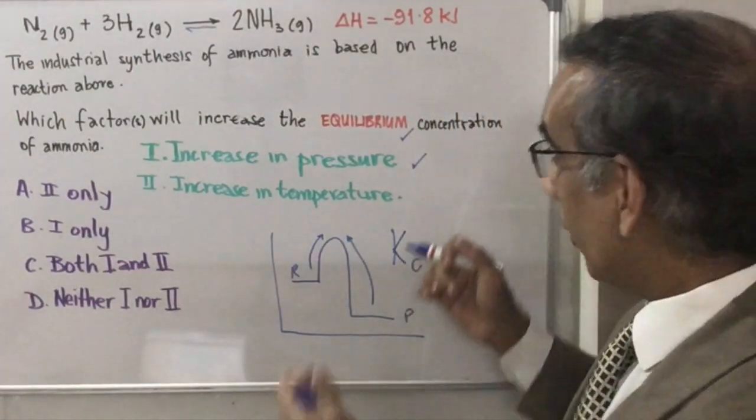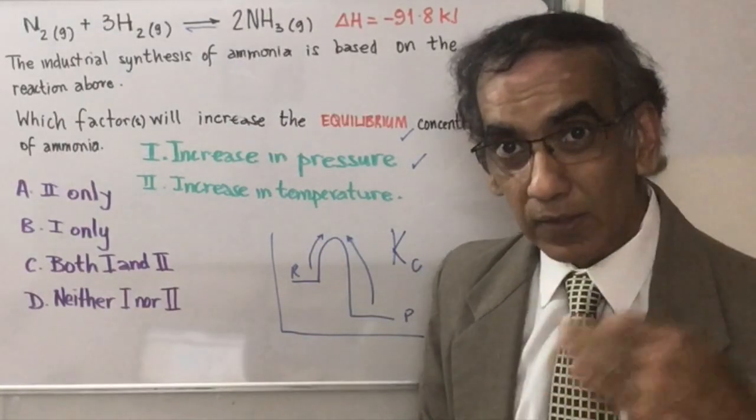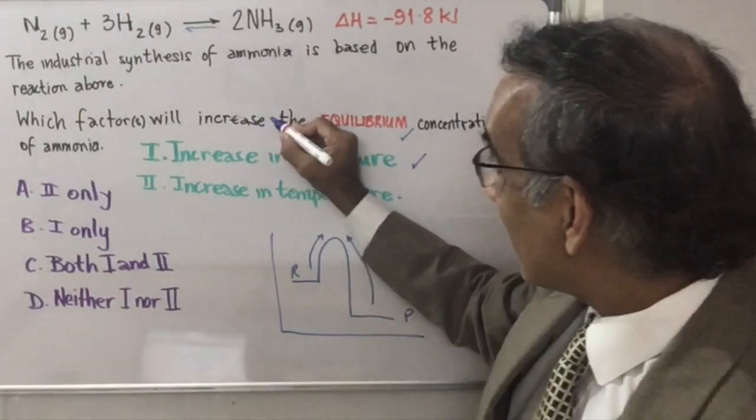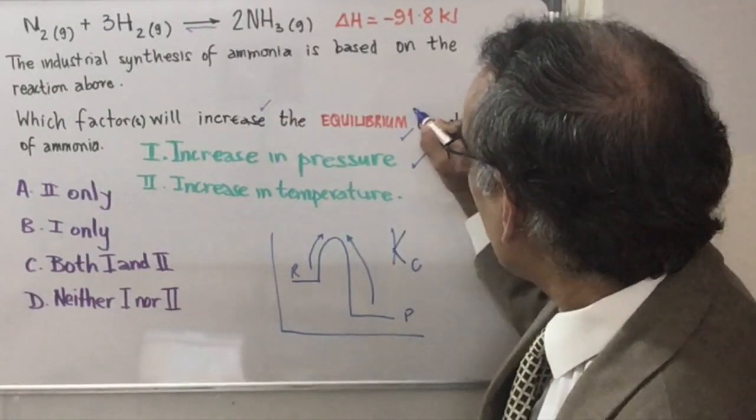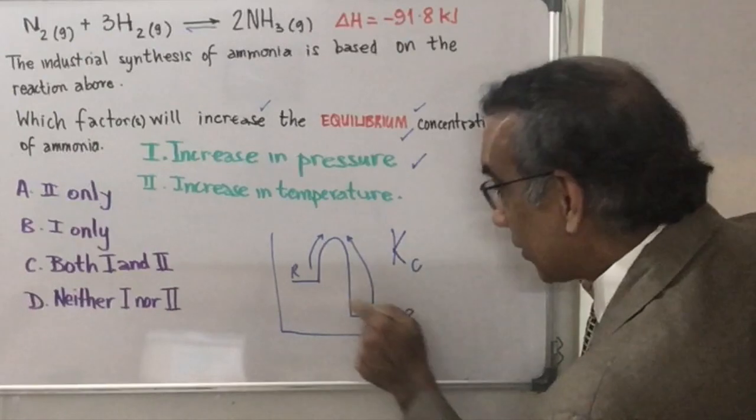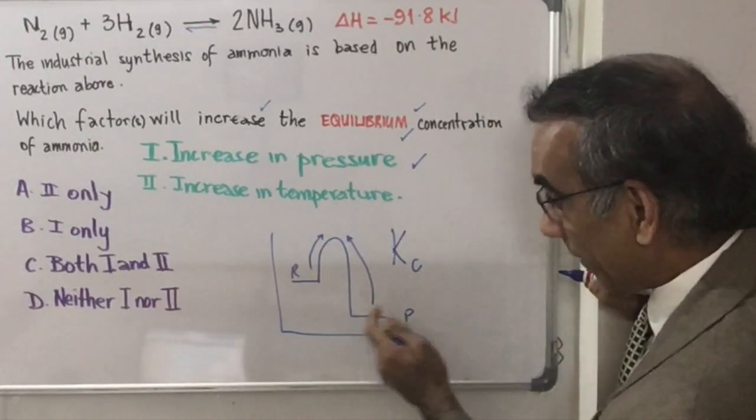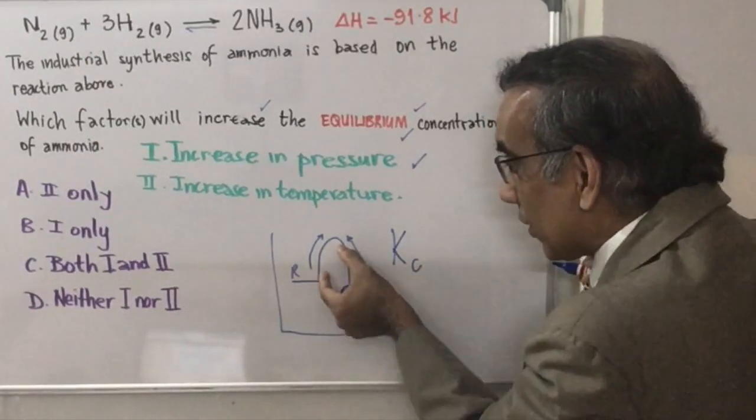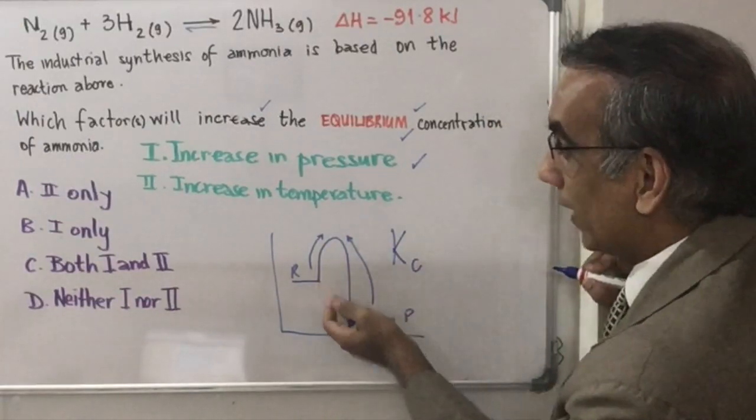Now, with a change in temperature, that does affect Kc. But the question asks about an increase in the equilibrium concentration. And of course, this is an exothermic reaction - one where the forward reaction has a smaller barrier to cross than the reverse reaction.